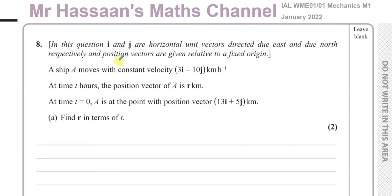This is the last question on this exam and it is all about vectors and velocity vectors. In this question, i and j are horizontal unit vectors directed due east and due north respectively, and position vectors are given relative to a fixed origin O. A ship A moves with constant velocity 3i minus 10j kilometers per hour. At time T hours, the position vector of A is R kilometers. At time T equals 0, A is at the point with position vector 13i plus 5j kilometers.